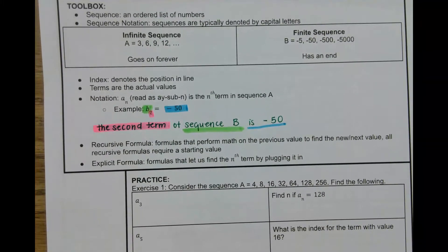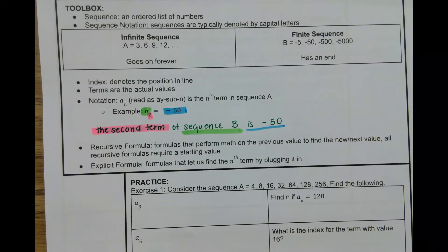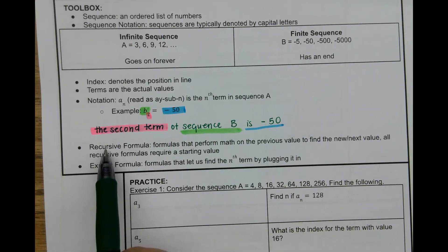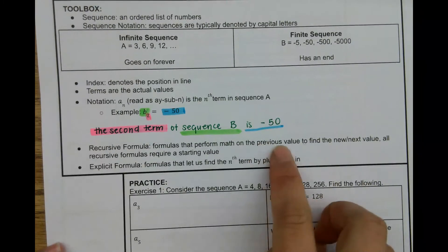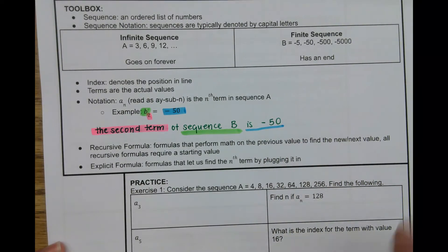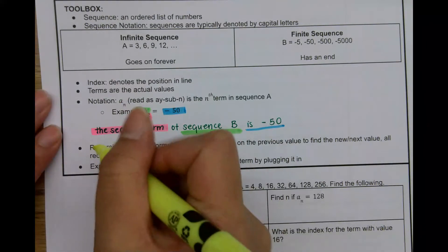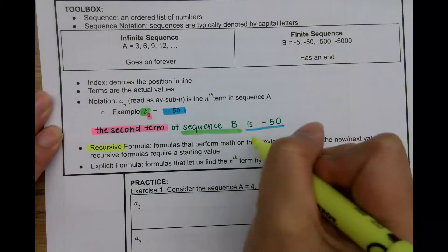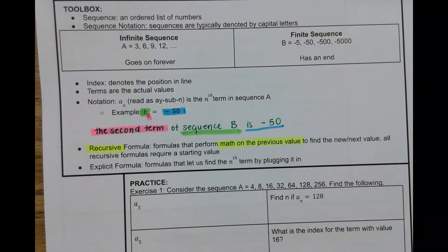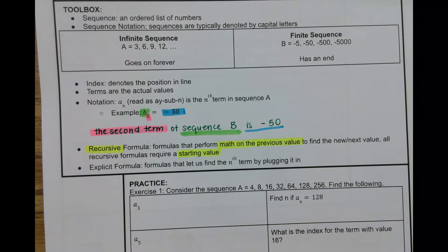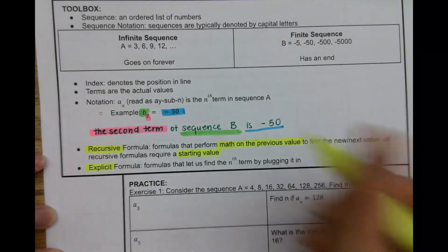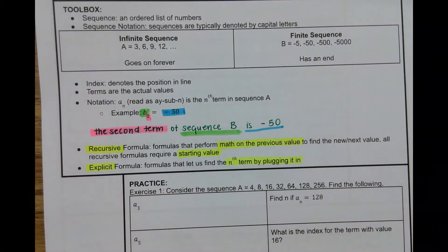We're going to be writing two types of formulas for sequences. The first is the recursive formula — a formula that performs math on the previous value to find the next value. All recursive formulas require a starting value. The other type is an explicit formula, which lets us find the nth term by simply plugging in that n, whatever position it is.